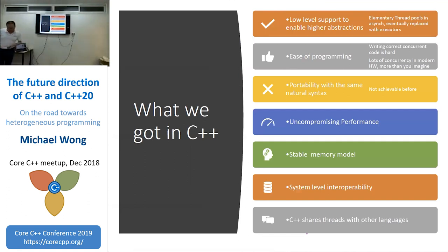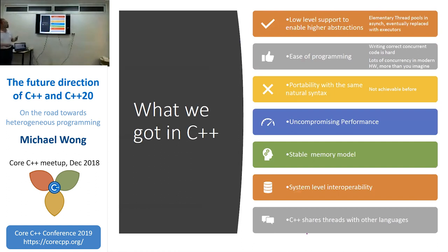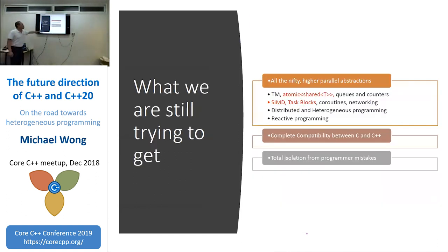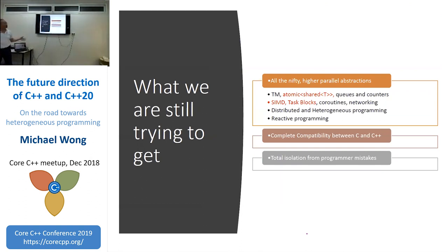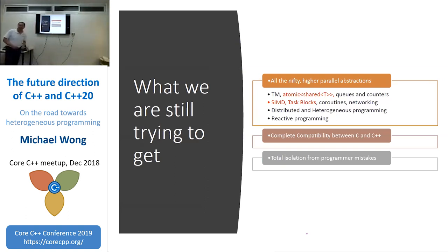We got low-level support. What we were intending to build was a way of giving you enough basic tools to build higher-abstraction facilities. Unfortunately we got something wrong along the way. What we didn't get — and are still trying to get — are higher abstractions: transactional memory, queues and counters, coroutines, networking. We still haven't gotten distributed and heterogeneous computing. We also never got full compatibility between C and C++.